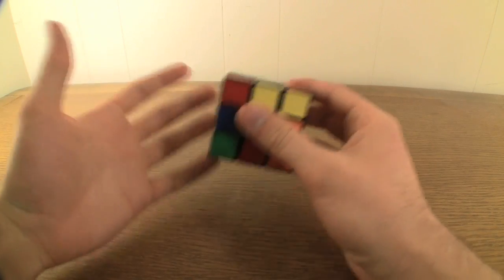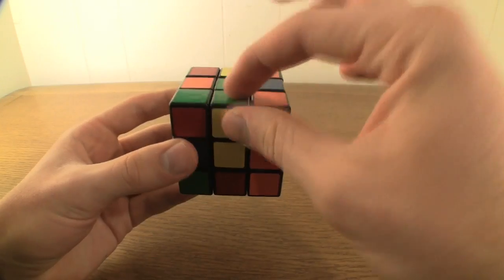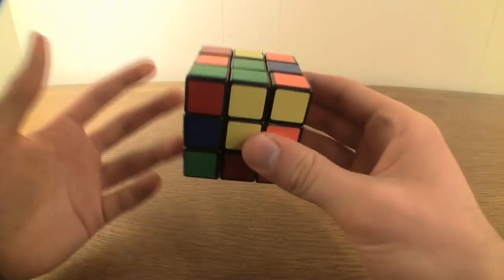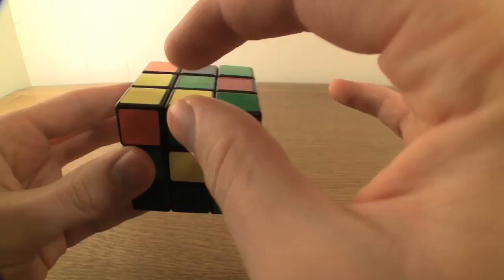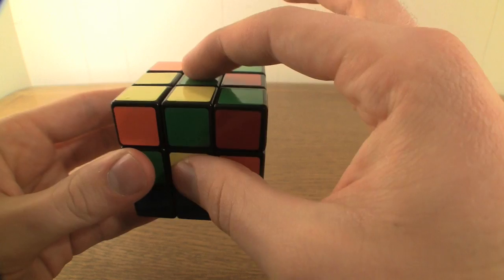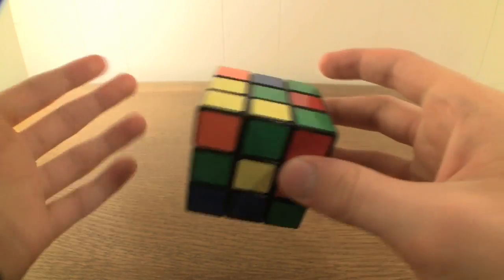Once you've done that, you'll have one of two possible situations. Either the edge piece in question will be exactly where it needs to be, oriented correctly, just like this, or the edge piece will be exactly where it needs to be, just flipped the wrong way.